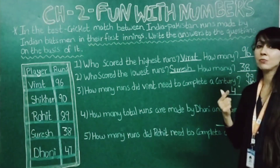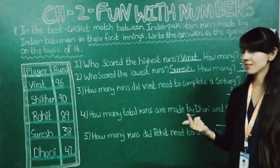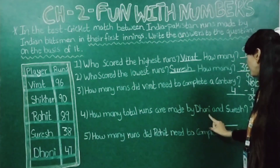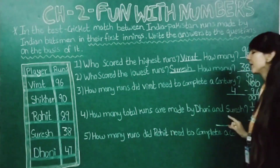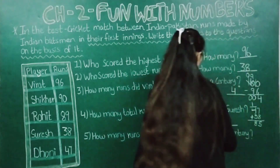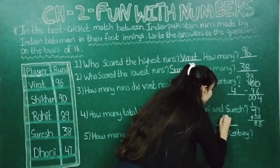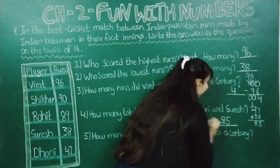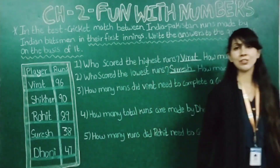So you can say 85 runs are made by Dhoni and Suresh. In this blank we will write 85.